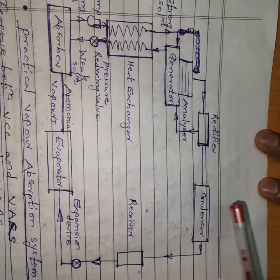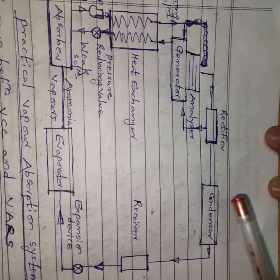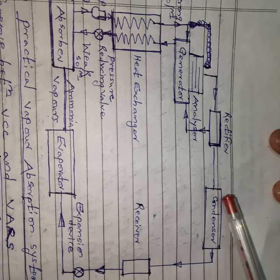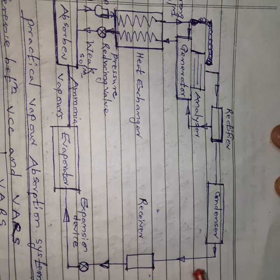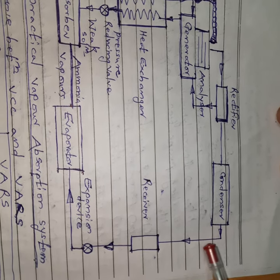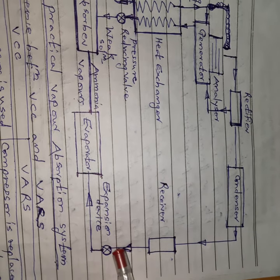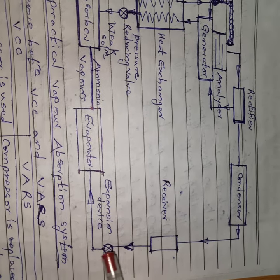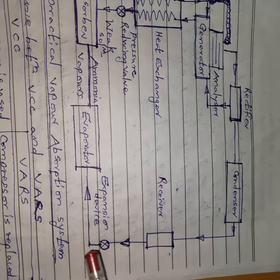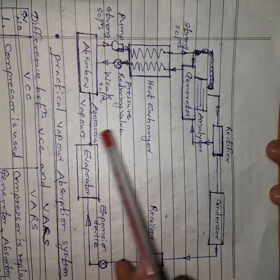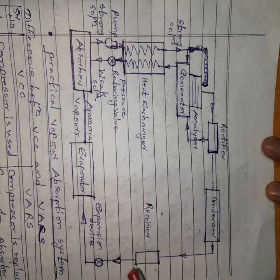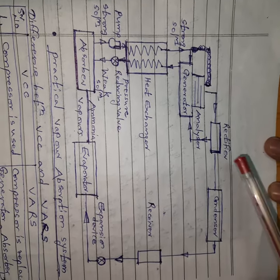In the condenser, using air or water, ammonia vapors are condensed into ammonia liquid — there is a phase change. This high pressure, normal temperature ammonia liquid moves through the expansion device where there is again a decrease in pressure and temperature. The resulting low pressure, low temperature ammonia liquid enters the evaporator, removes heat, and produces the cooling effect. This is the working of the vapor absorption refrigeration cycle.